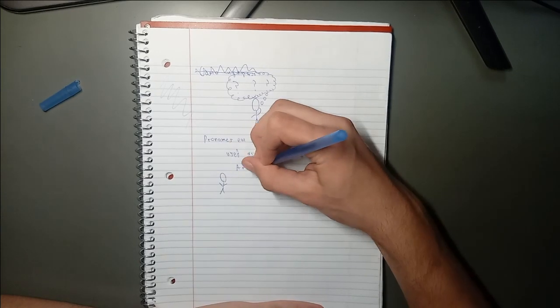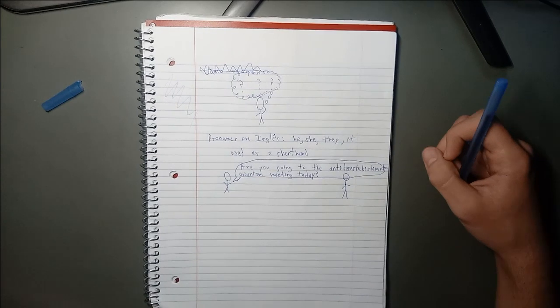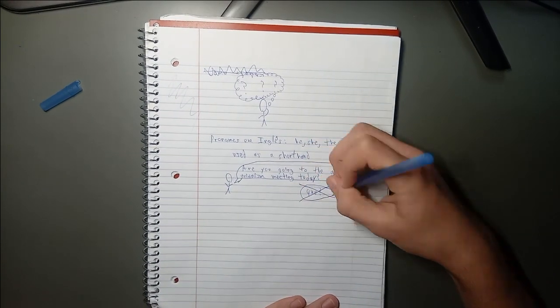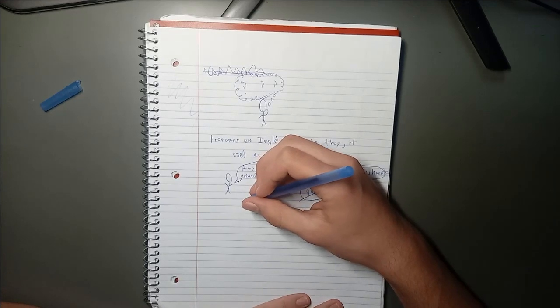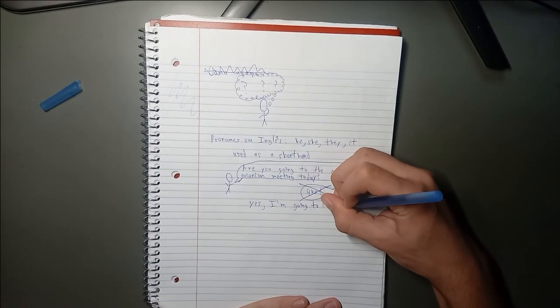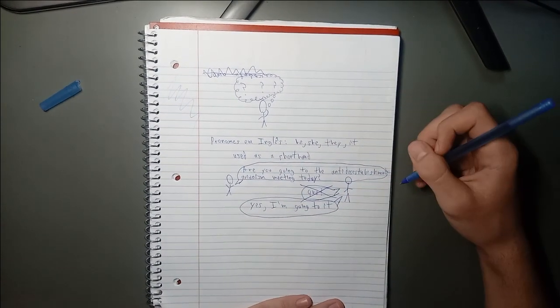For example, if someone asks me if I'm going to the anti-disestablishmentarianism meeting, I would probably respond with, what? But if I knew what anti-disestablishmentarianism was, and that there was a meeting centered on anti-disestablishmentarianism and the discussion of anti-disestablishmentarianism, I would respond with, yes, I'm going to it.